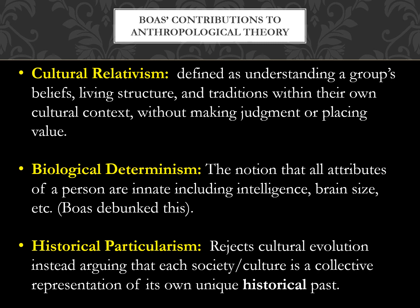Boas conducted a study at Ellis Island where he measured physical attributes — stature, height, weight — of incoming immigrants, and then about ten years later measured the same attributes of those immigrants' children, the first generation born in the United States. The major discovery was that children born and raised in the United States, on a U.S. diet, had the same body proportions as people whose families had been living in the United States for generations.